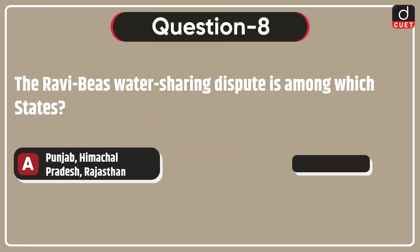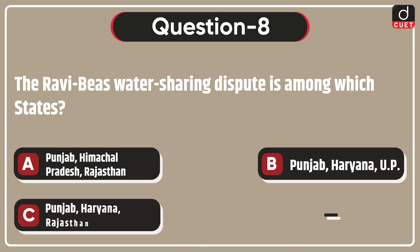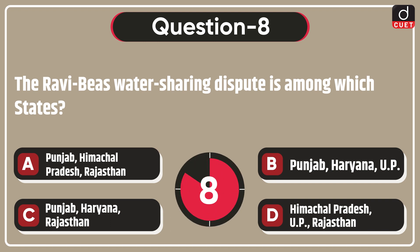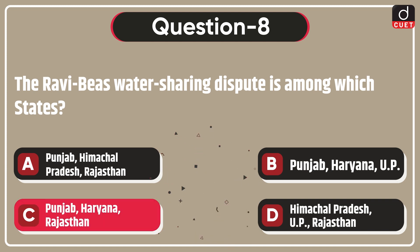Next question is, the Ravi Beas water sharing dispute is among which states? Options: Punjab and Himachal Pradesh and Rajasthan, Punjab and Haryana and UP, Punjab and Haryana and Rajasthan, or Himachal Pradesh and UP and Rajasthan? The correct answer is option C, Punjab, Haryana, and Rajasthan.